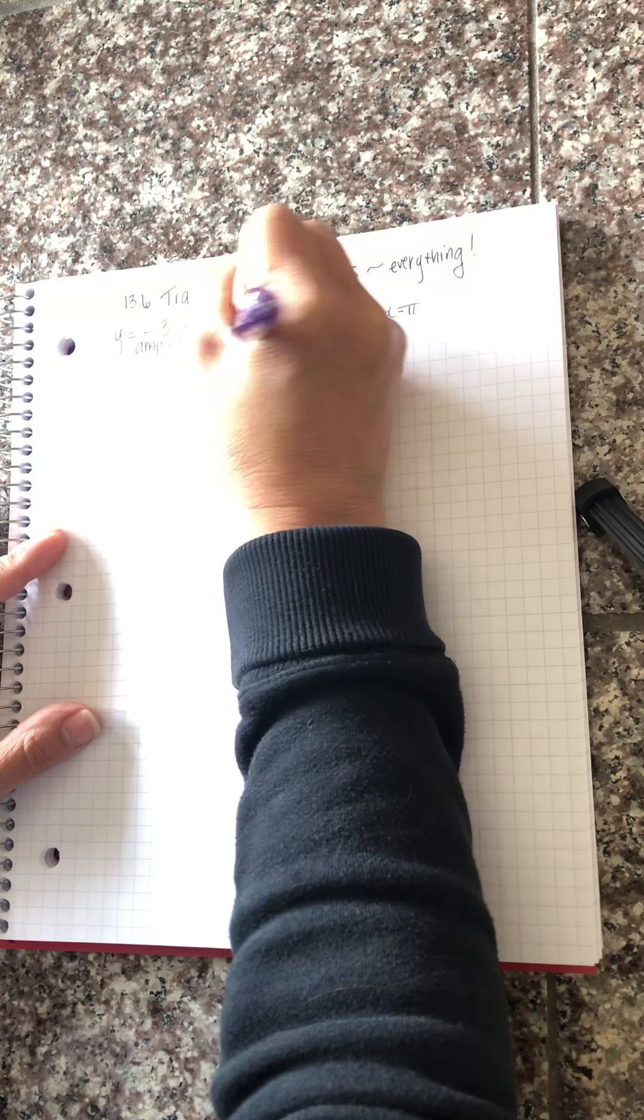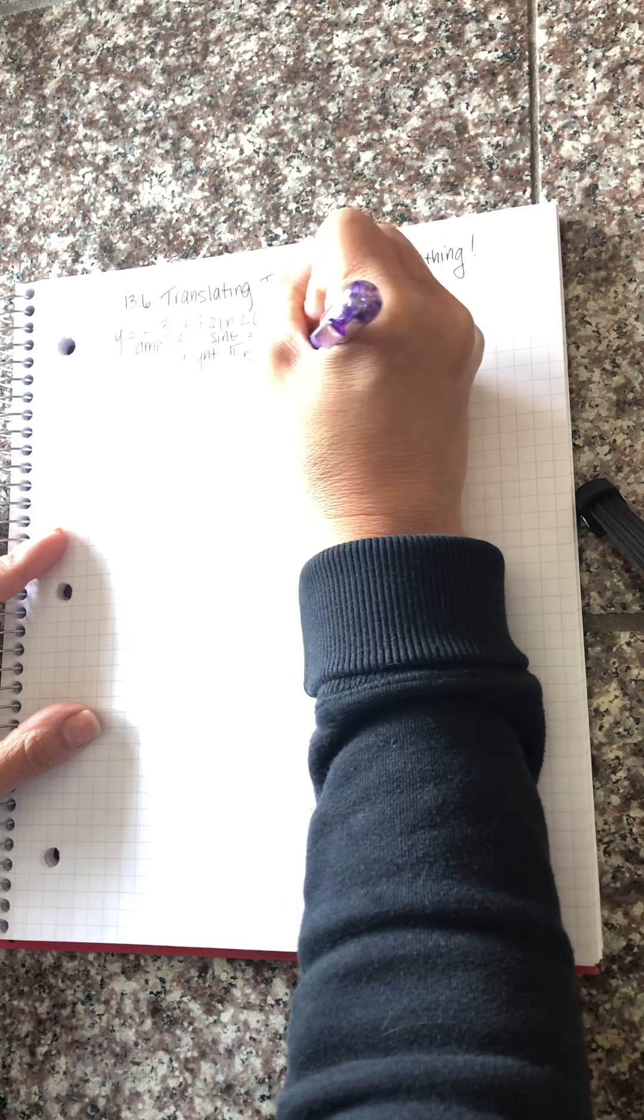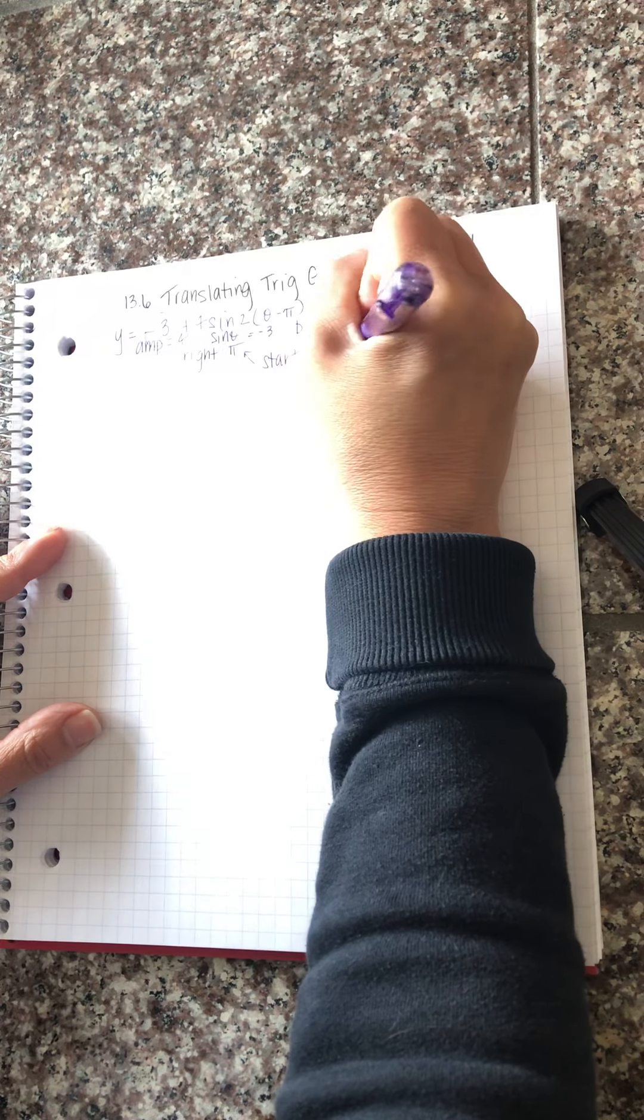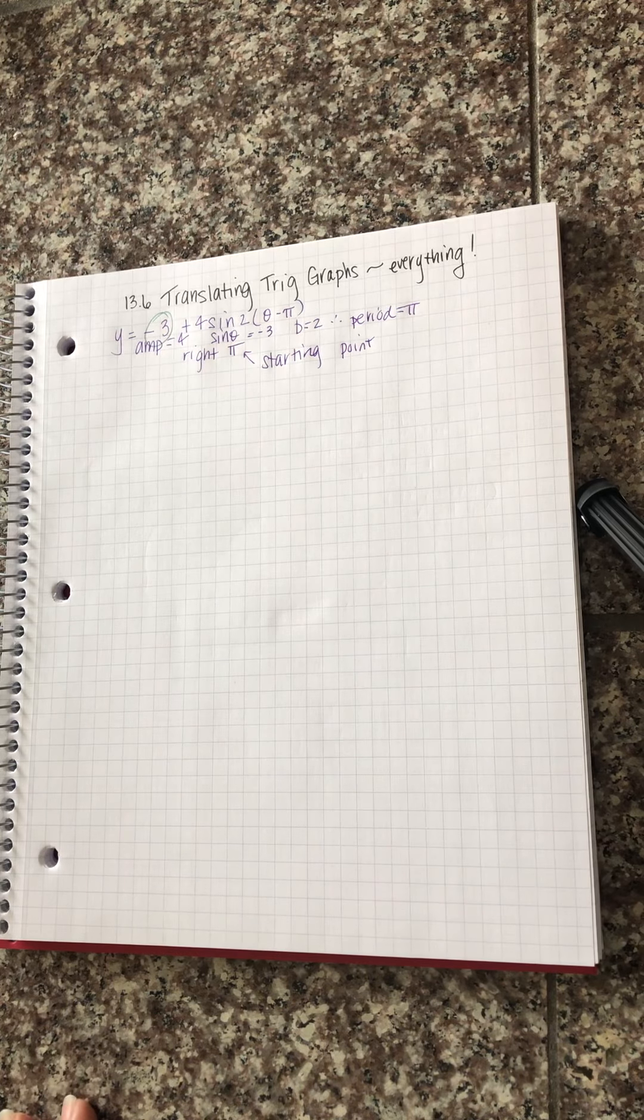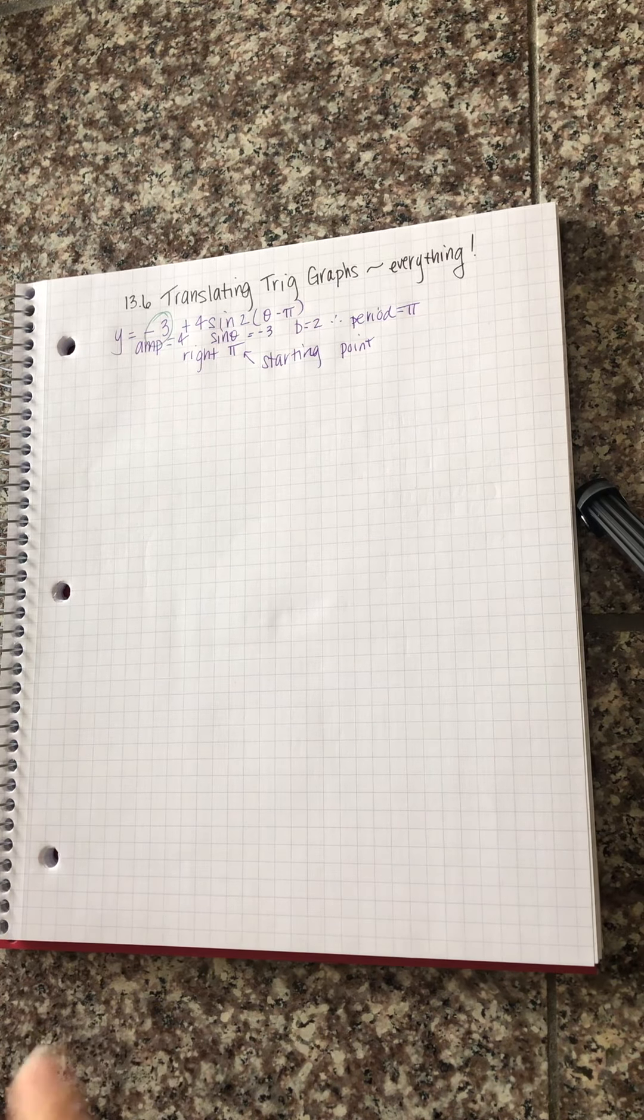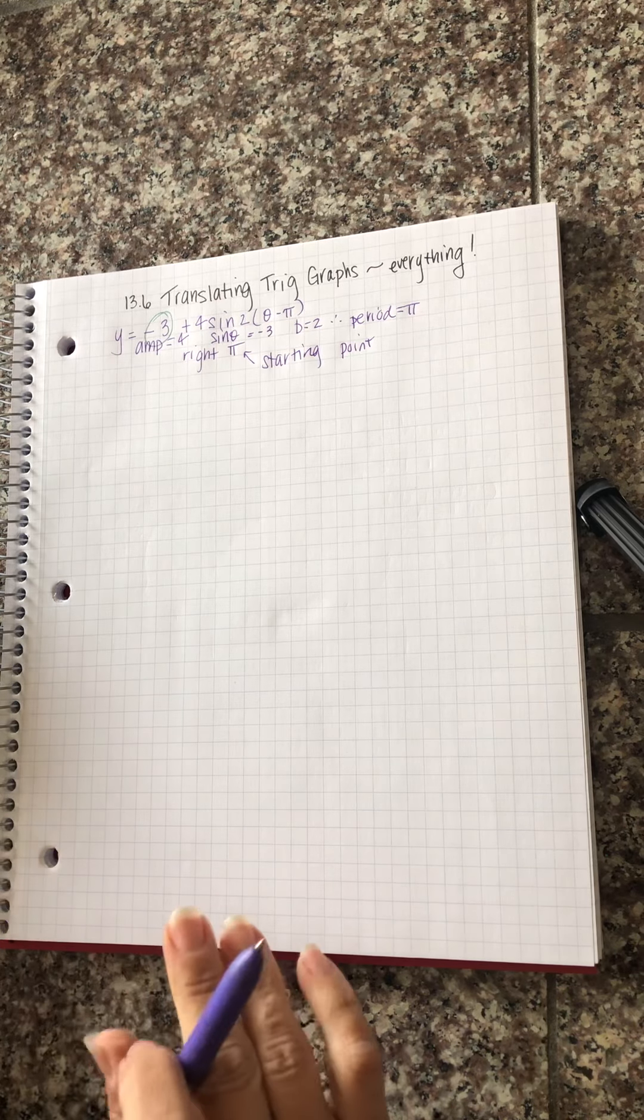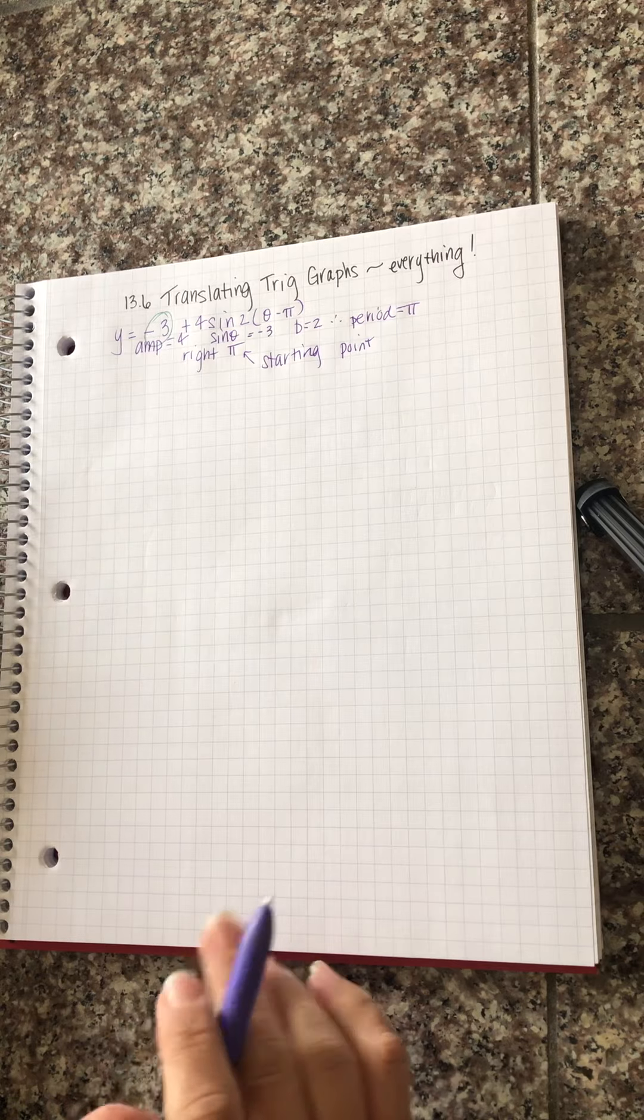Okay so this is my starting point. Okay so now I'm going to go ahead and graph this. So if the period is pi you may want to determine your intervals. It's up to you. Pi divided by four is pi over four.